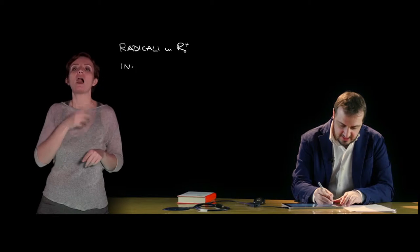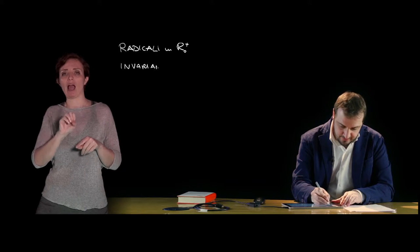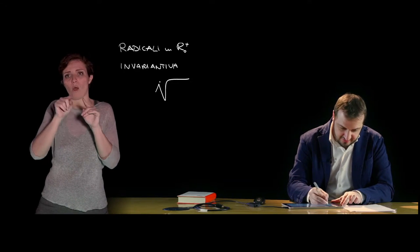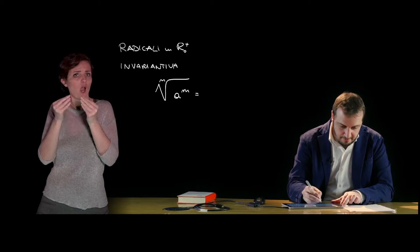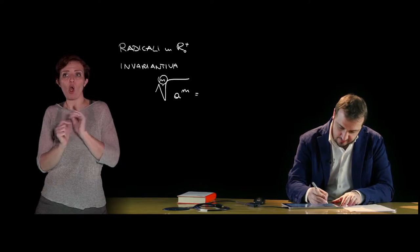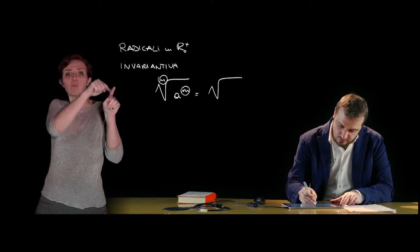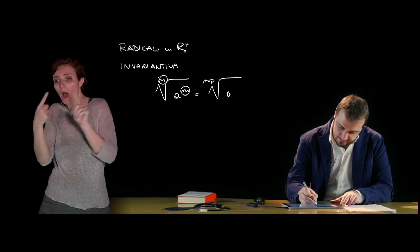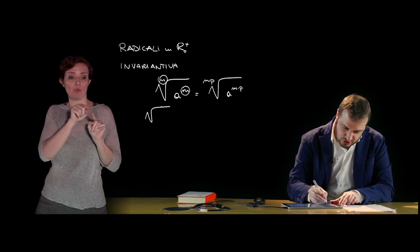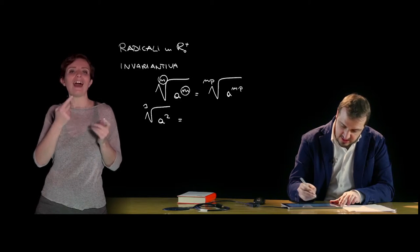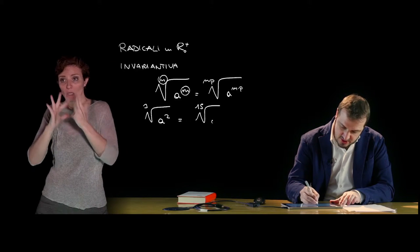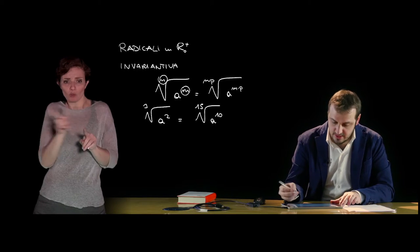Let us begin with the invariant property. The invariant property tells us that, given a radical, it is possible to obtain an equivalent radical by multiplying by the same natural number p ≠ 0 both the index of the radical and the exponent of the radicand. For example, the cube root of a squared, if we multiply both the index and the exponent by 5, becomes the 15th root of a to the 10th power — an entirely equivalent radical.